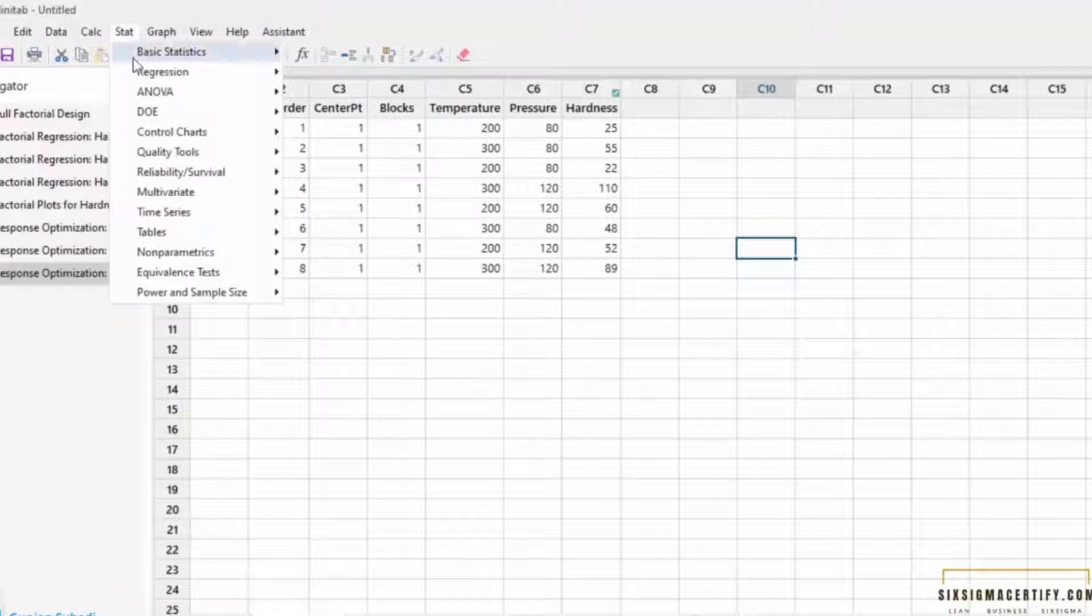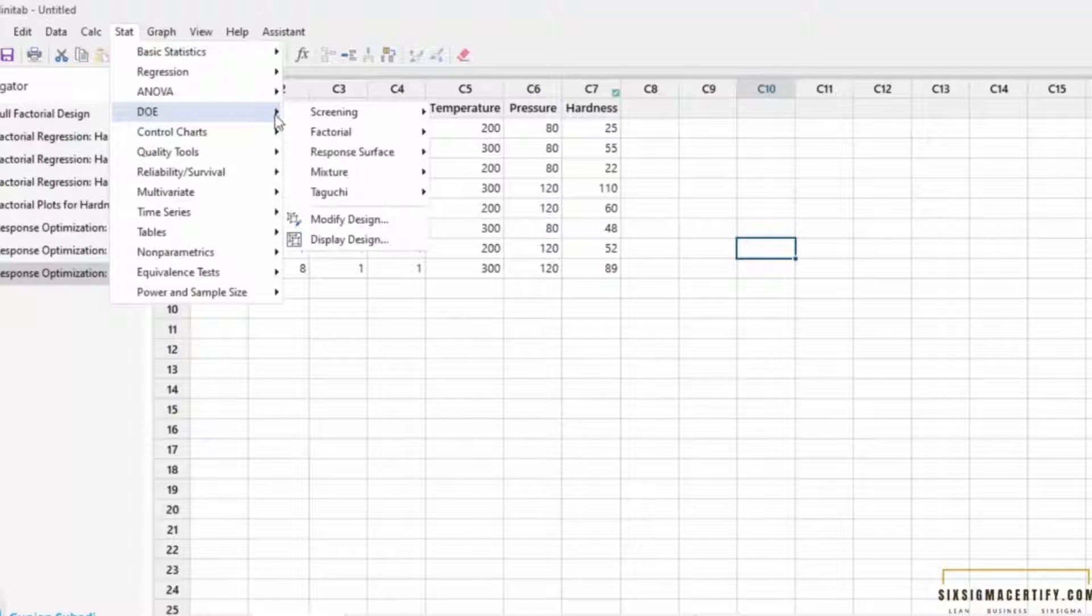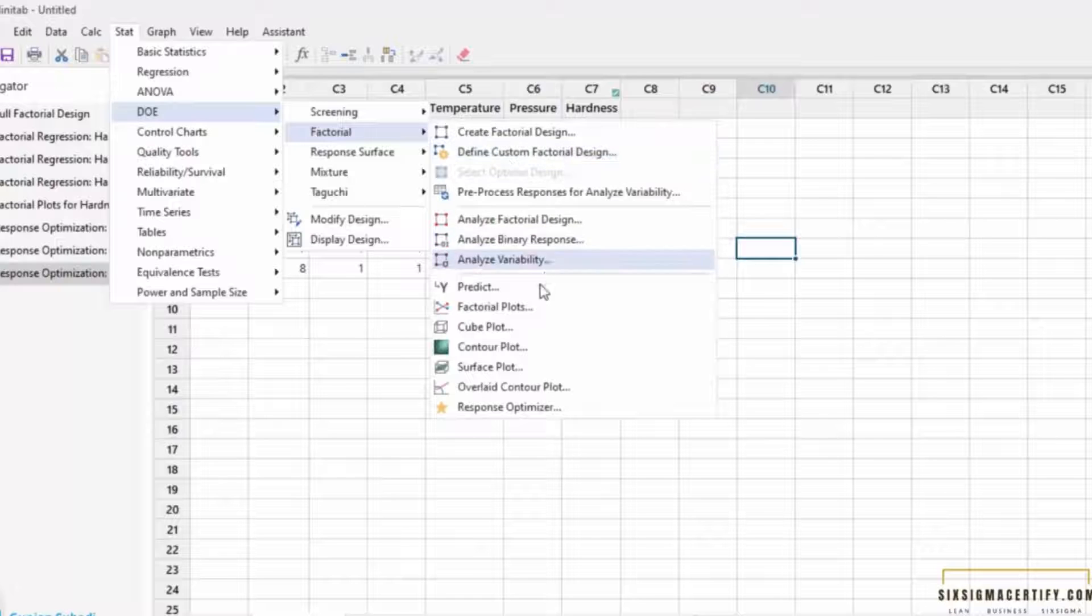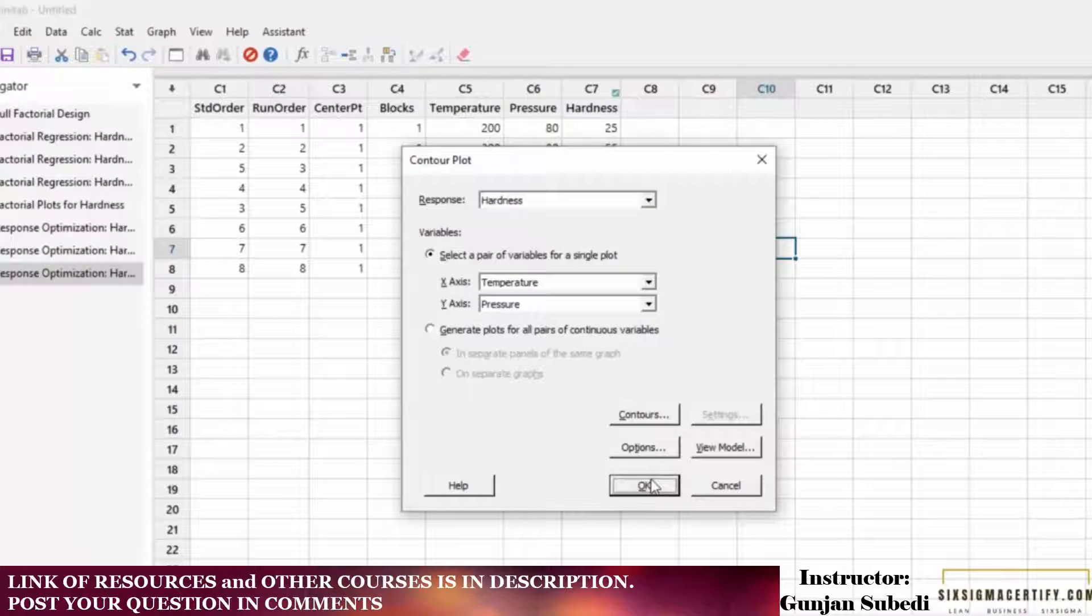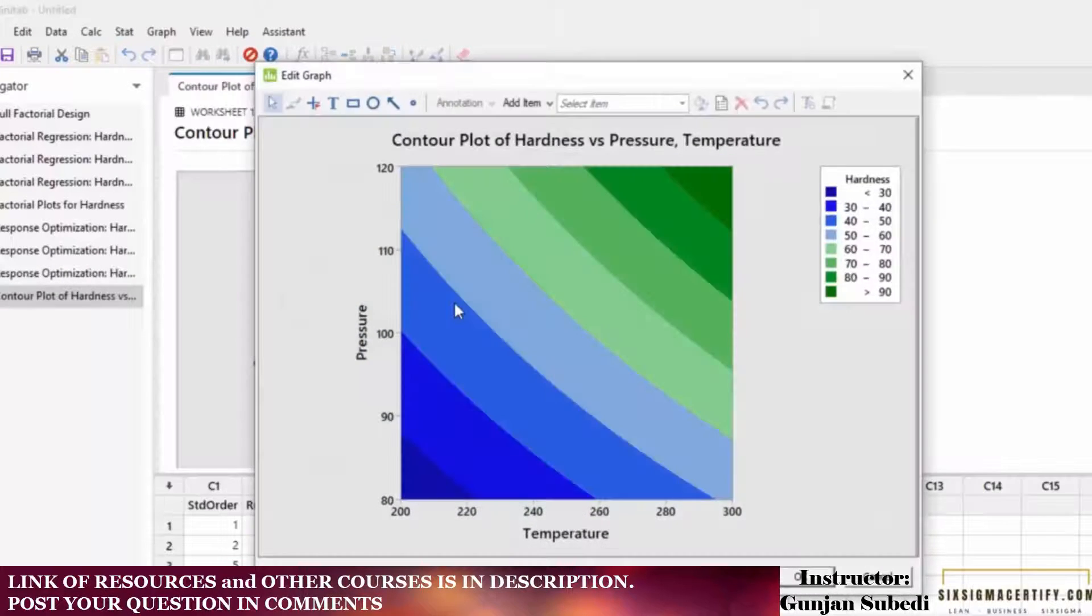For that you go to Stat, you go to Design of Experiments, go to Factorial, and first of all let's select the contour plot. Here your response is the hardness. We don't have to do anything over here, let's just click on the OK button. You get the contour plot of hardness versus temperature and pressure.